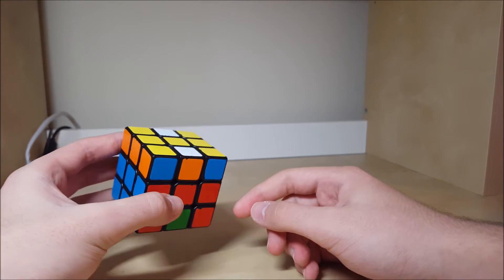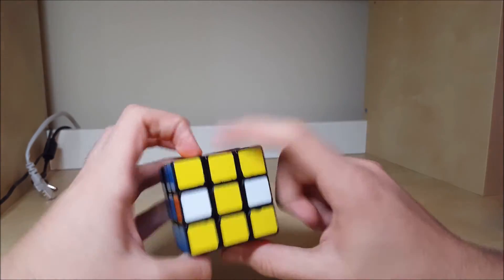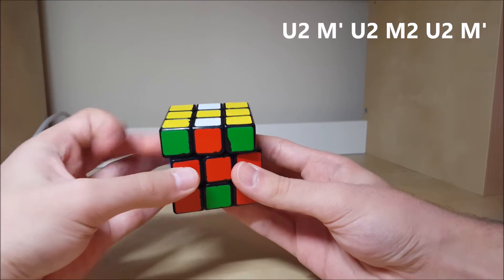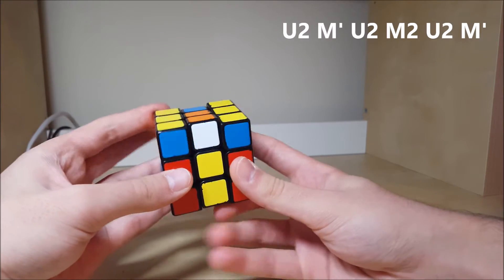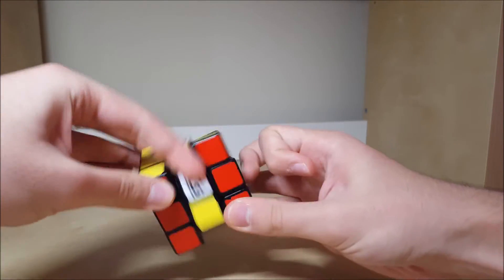You can actually do something called front and back instead of left and right, because these two are solved. From here, when you have like opposites here, you do U2, M', U2, M2, U2, M', and then it'll be solved. So once again,